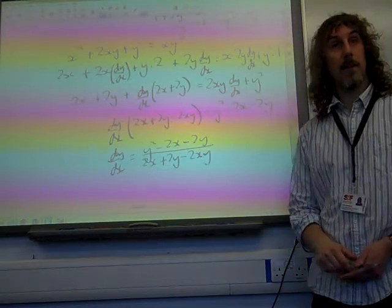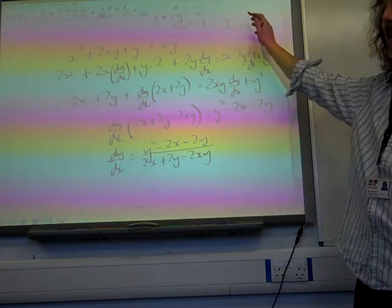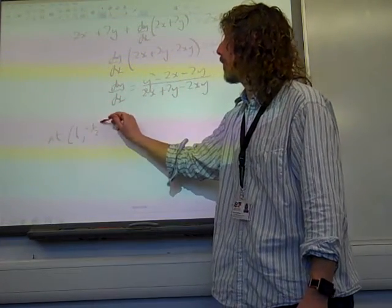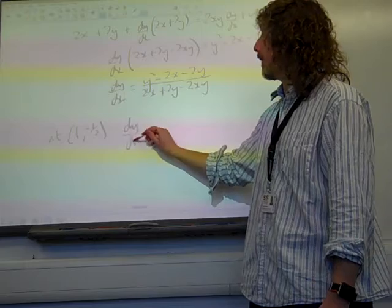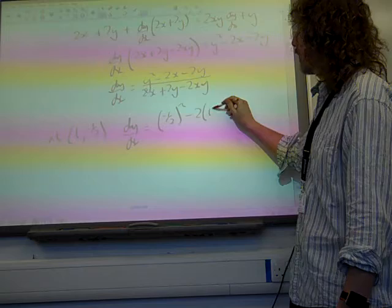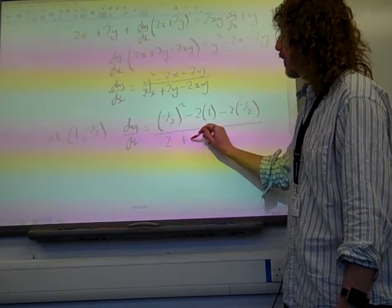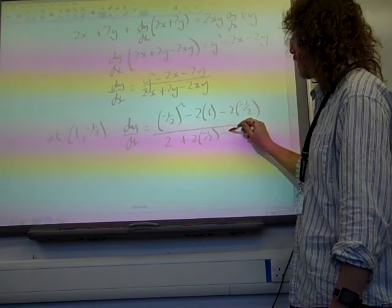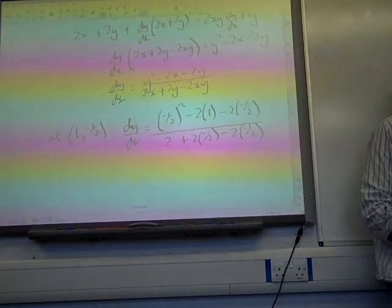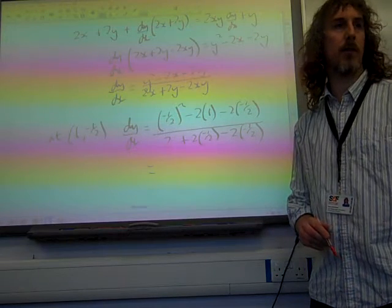Now the question did say find the value of dy by dx when x is 1 and apparently y is minus 1 half. We worked that out earlier. So at the point, 1 minus 1 half. Summing that in gives me all of this to work out. And just being careful about summing values into that, we're going to get minus 3 eighths.